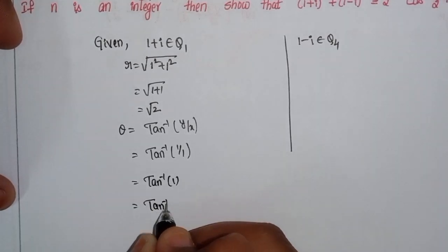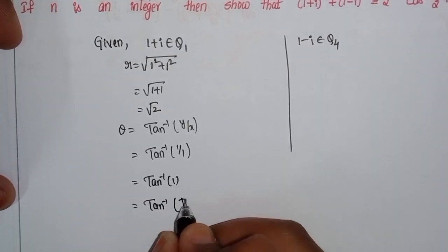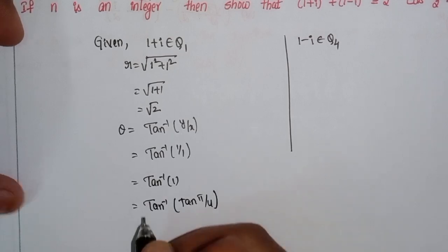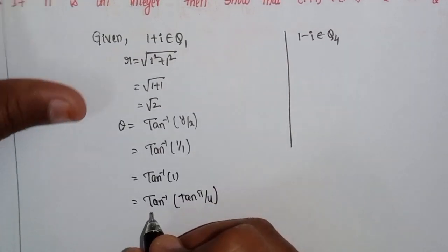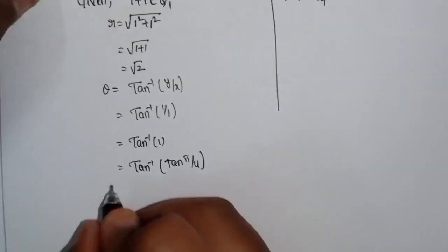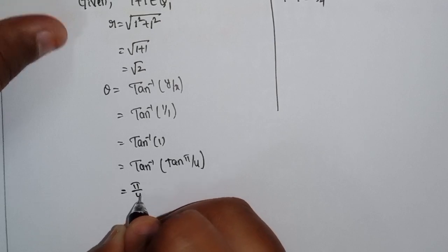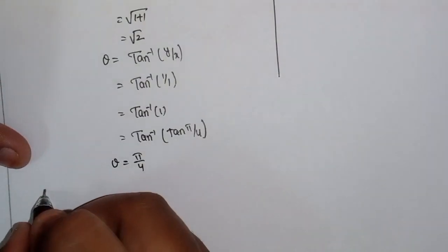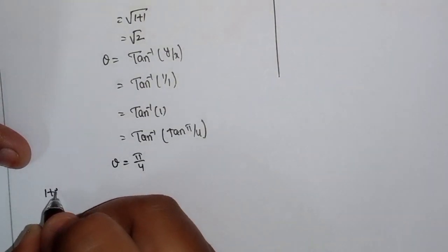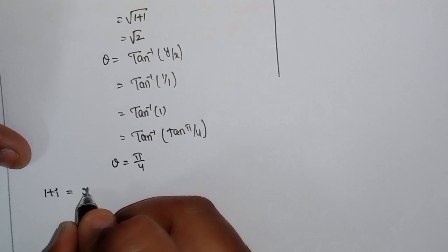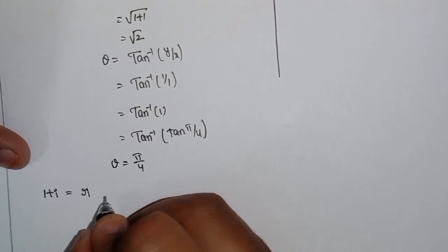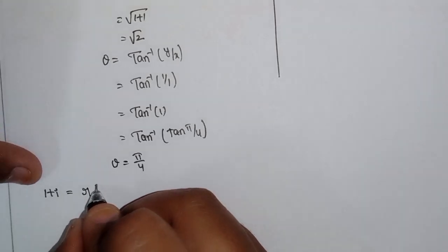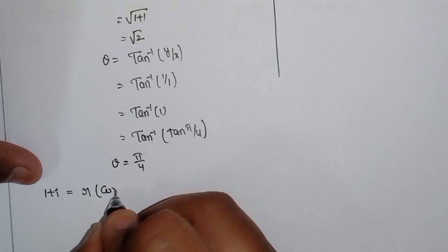tan⁻¹(tan(π/4)) — tan⁻¹ and tan cancel, so θ = π/4. Now find the modulus-amplitude form: 1+i = r(cosθ + i sinθ).